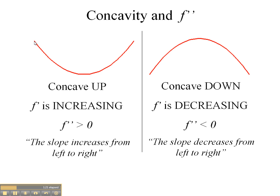The reason it's concave up is because the slopes are increasing as we go from left to right. Conversely, the graph will be concave down, or open downwards, when the first derivative is decreasing, which is when the second derivative is less than zero. The reason it's concave down is the slope is decreasing from left to right.